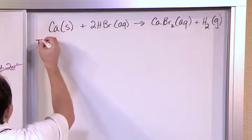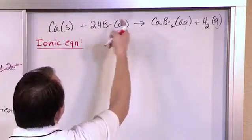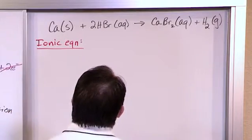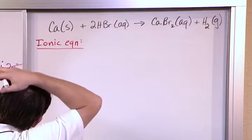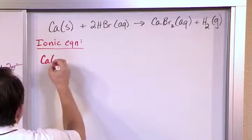So for the ionic equation, what you do is go species by species and break it apart if it's in water, and figure out what the charges on everything is going to be. Well, this is a solid, it's not an aqueous solution. It's just some calcium powder. So that just stays the same, Ca(s).